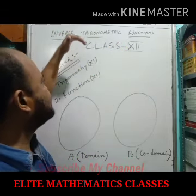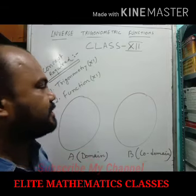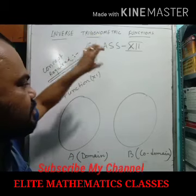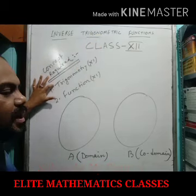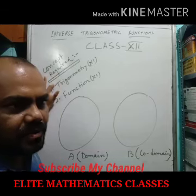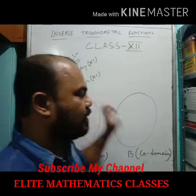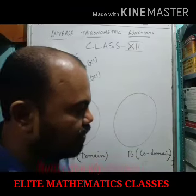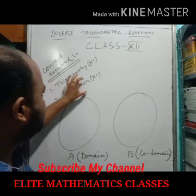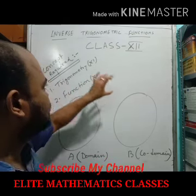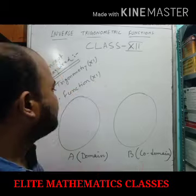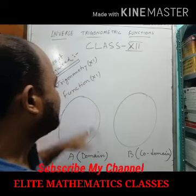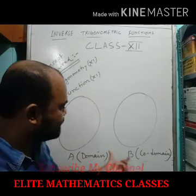For this chapter we need some concepts. The first concept required is trigonometry — that is the concept of Class 11 trigonometry. All the formulas and concepts you have to memorize and keep in mind for the whole Class 12 syllabus. The second concept you need is the concept of functions, which is also a topic of Class 11.